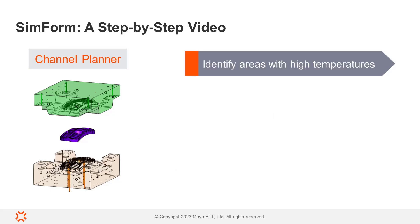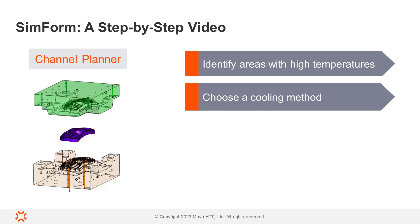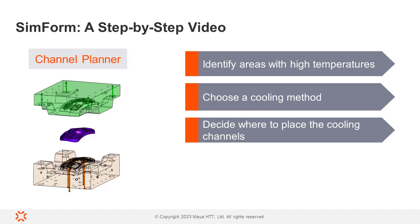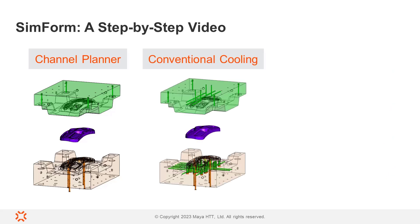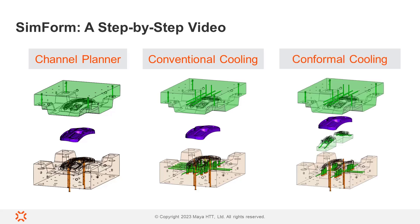This analysis helps to identify the areas with high temperatures that let you decide which cooling method to use, where to place the cooling channels, and where to include inserts and other thermal components such as baffles, bubblers, or pins. Then I will run an analysis of a conventional cooling design and a conformal cooling design for the same plastic part to compare the temperature results and analyze the efficiency of the two approaches.